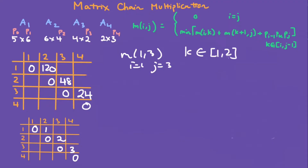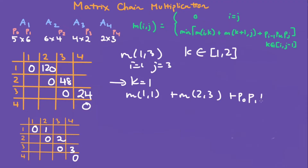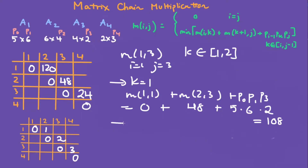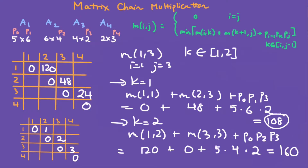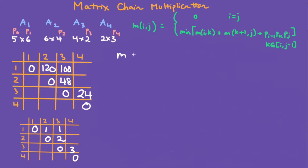Now for m[1,3]: i is 1, j is 3, and k goes from 1 to 2. When k is 1, we have m[1,1] plus m[2,3] plus p0 * p1 * p3. That's 0 plus 48 plus 5 * 6 * 4, giving 108. When k is 2, we have m[1,2] plus m[3,3] plus p0 * p2 * p3. That's 120 plus 0 plus 5 * 4 * 2, giving 160. The smallest is 108, so fill in 108 and the chosen k is 1.